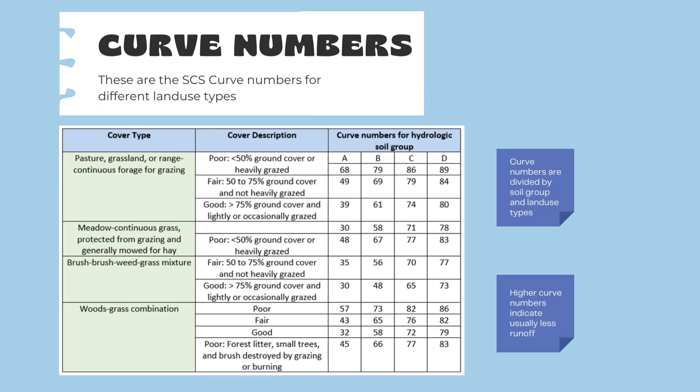Now let's get into curve numbers. These are the SCS curve numbers for different land use types. You can see the cover type, its description, and then the curve numbers for hydrologic soil groups A, B, C, and D. The cover types include pasture, grassland, meadow, continuous grass, brush or brush-weed-grass mixture, and wood-grass combination. For each of those, there's a description of whether it's poor, fair, or good, and then the corresponding curve number for each soil type letter A, B, C, or D. The curve numbers are divided by soil group and land use types, and higher curve numbers typically indicate usually less runoff.